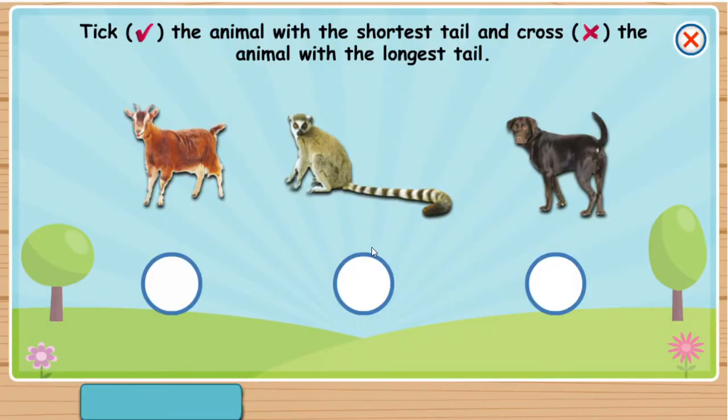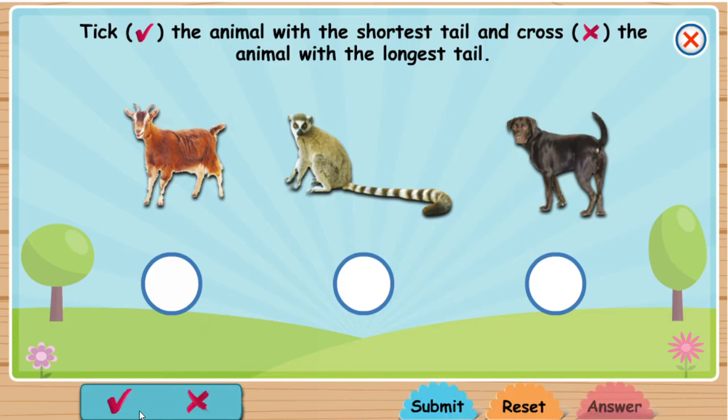Tick the animal with the shortest tail and cross the animal with the longest tail.